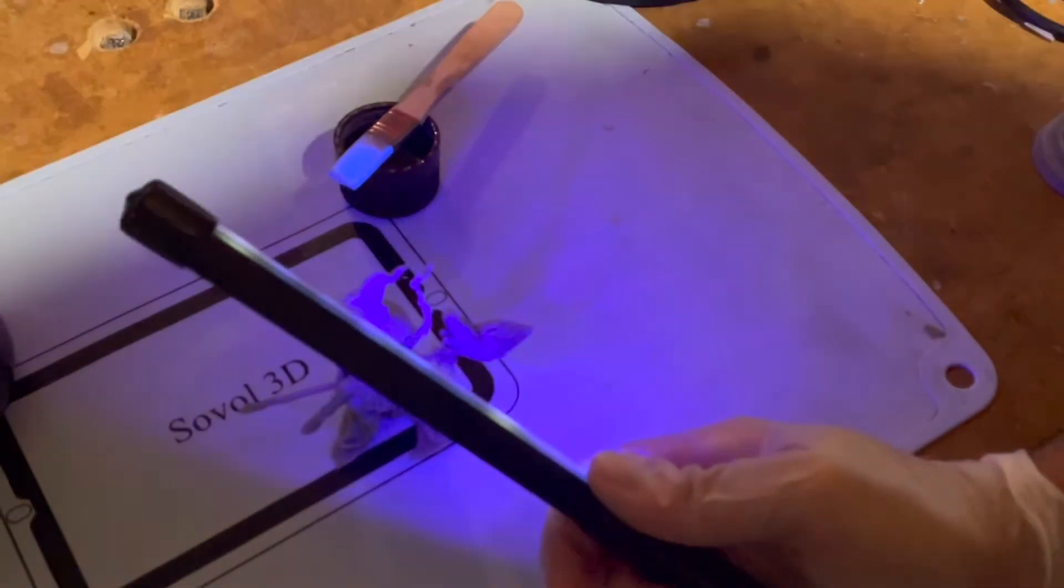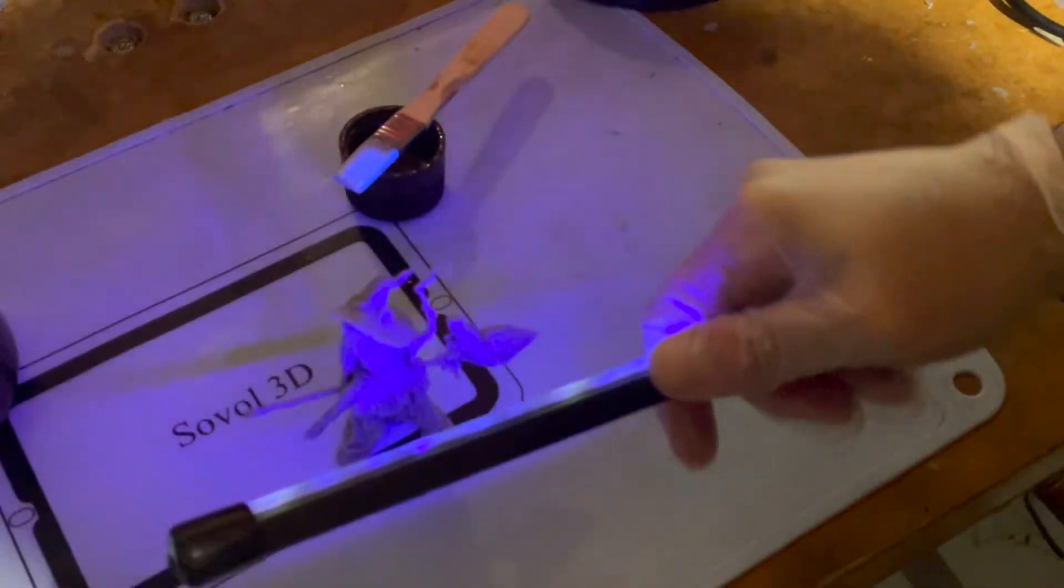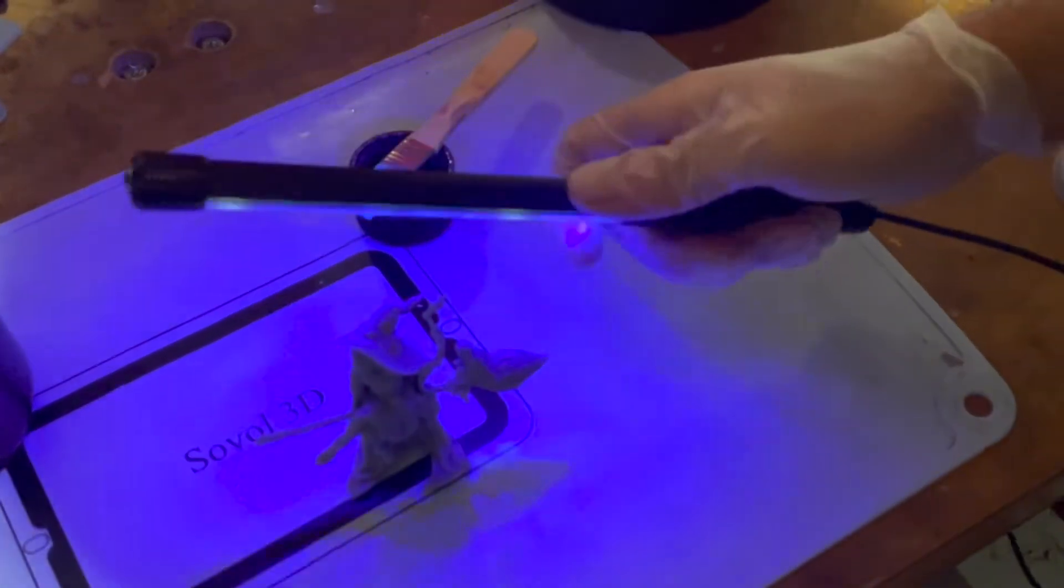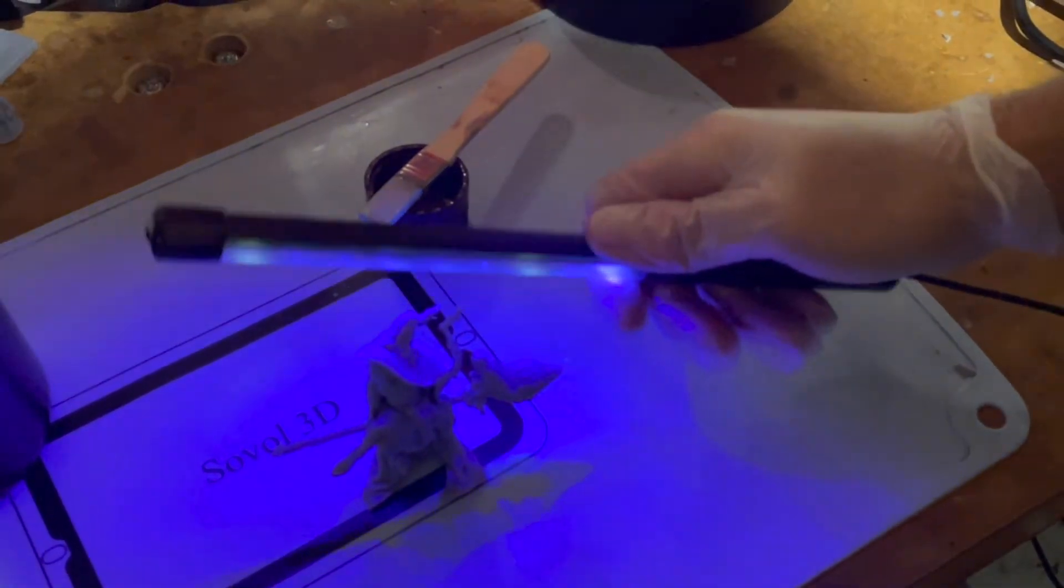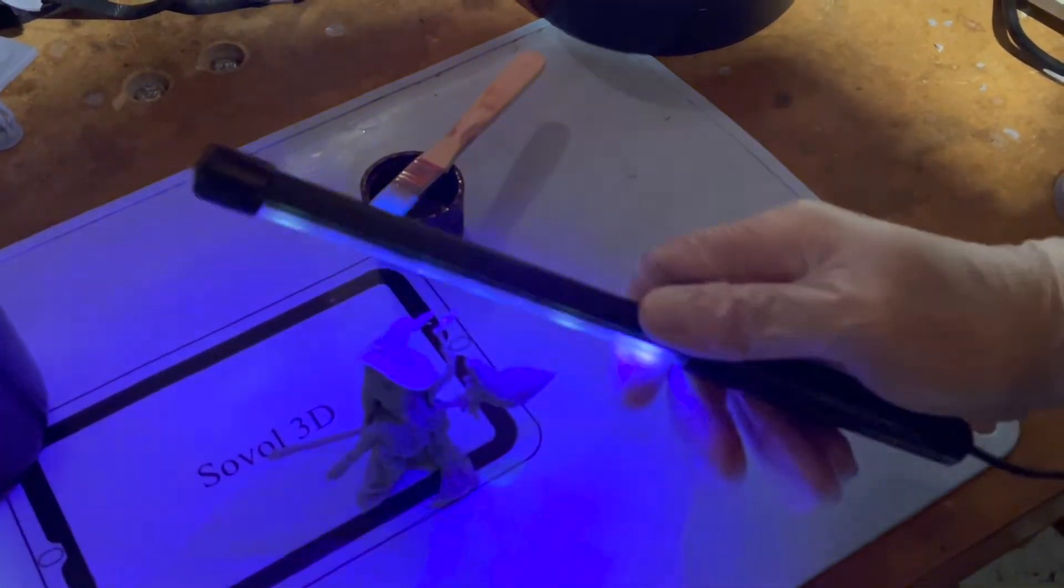Let it harden. This is a UV wand. You could also use a UV gun. They sell like a UV gun that actually does the same thing. It just hardens the resin.